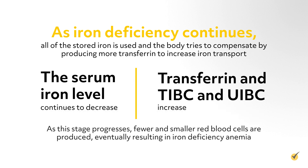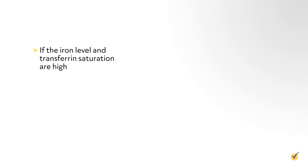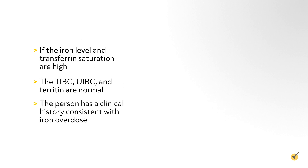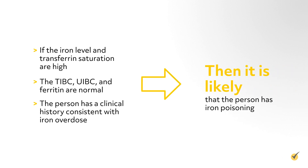As this stage progresses, fewer and smaller red blood cells are produced, eventually resulting in iron deficiency anemia. On the other hand, if the iron level and transferrin saturation are high, the TIBC, UIBC, and ferritin are normal, and the person has a clinical history consistent with iron overdose, then it is likely that the person has iron poisoning.